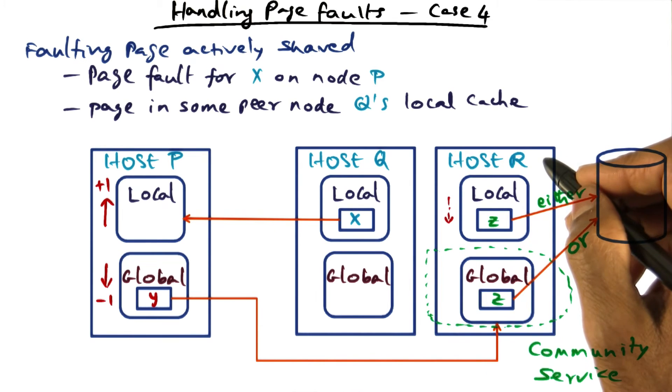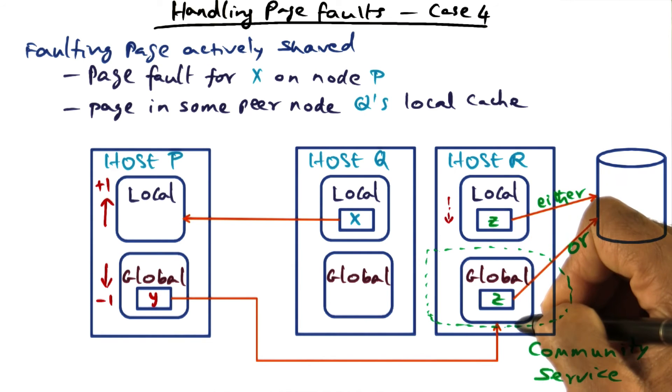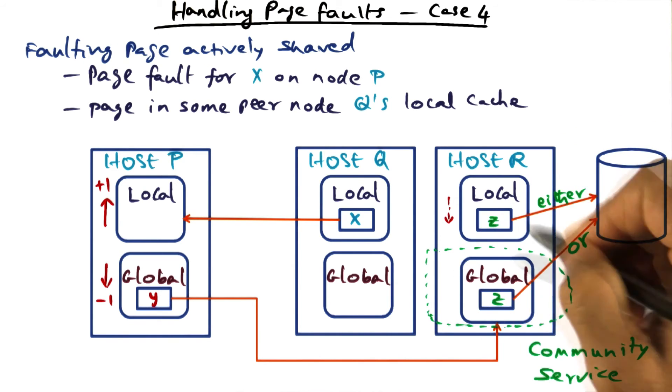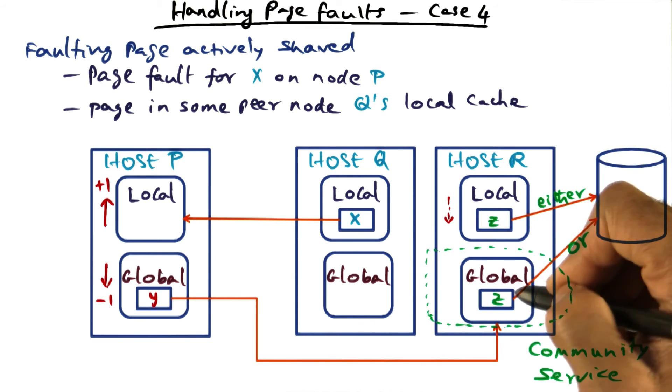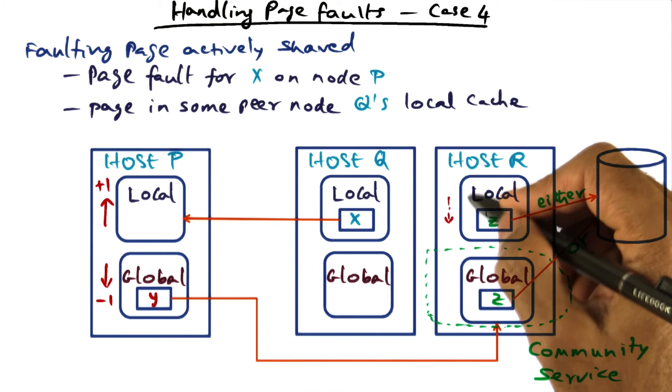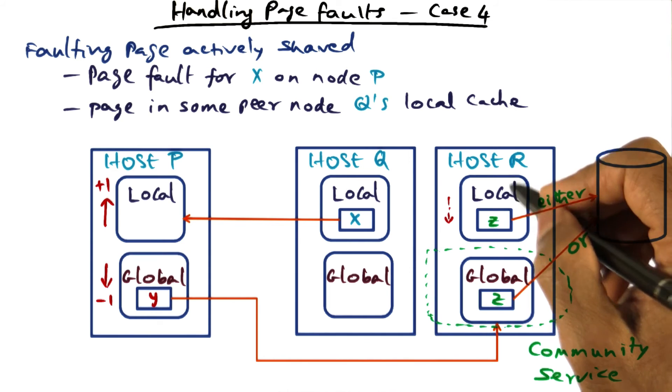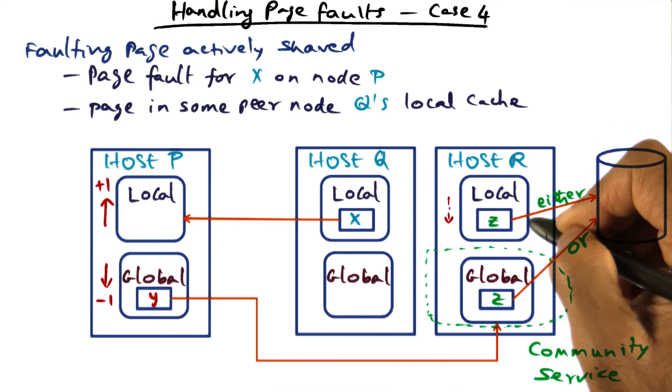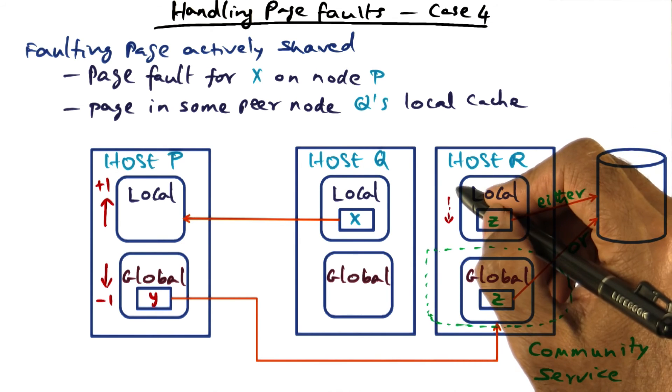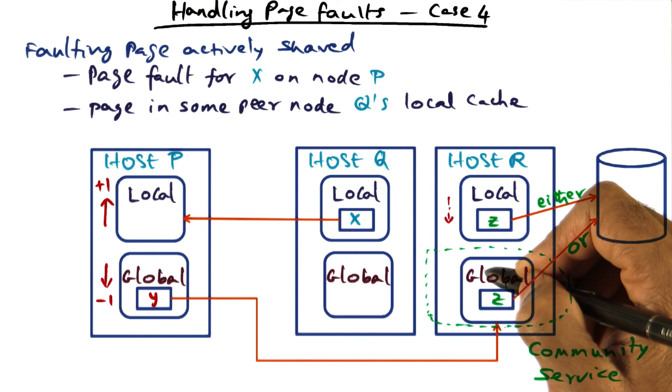On the other hand, in host R, if the replacement candidate came out of the global part, then there is no change in the split between local and global on host R either. On the other hand, if the replacement candidate came from the local cache of host R, what that means is that the working set, memory pressure on host R is decreasing. And therefore, L will go down by one, and G will go up by one.